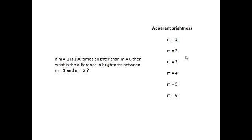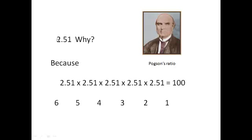So if M equals 1 is 100 times brighter than M equals 6, then what's the difference in brightness between M equals 1 and M equals 2? In other words, if there's one order of magnitude between the brightnesses, how many times brighter is star 1 compared with star 2? And the answer is 2.51, which is known as Pogson's ratio after this guy here.